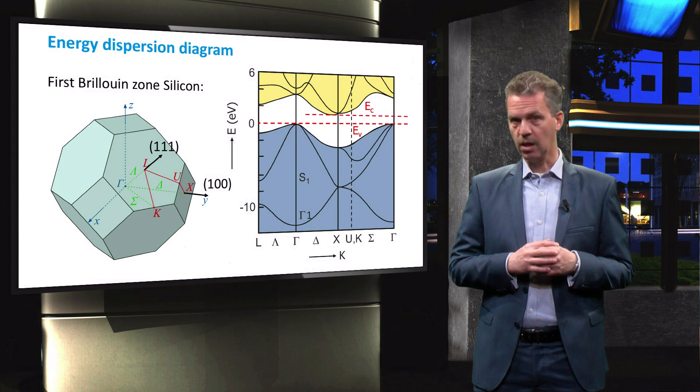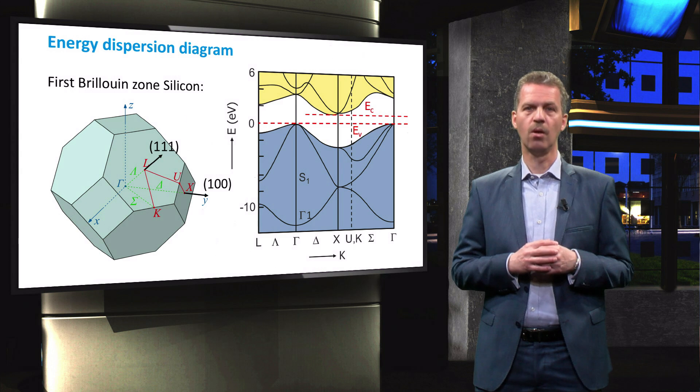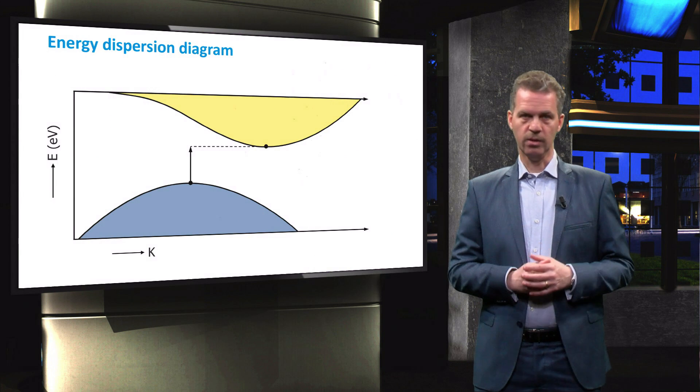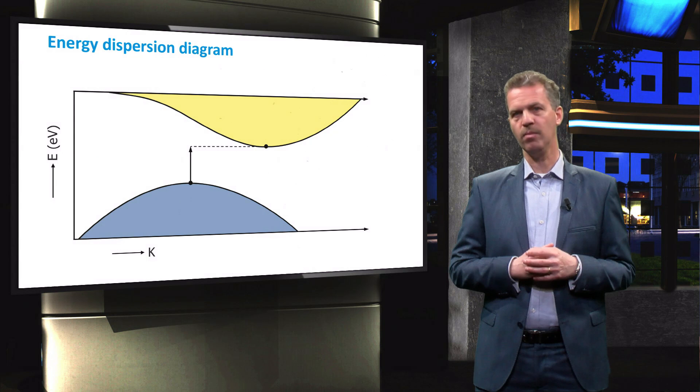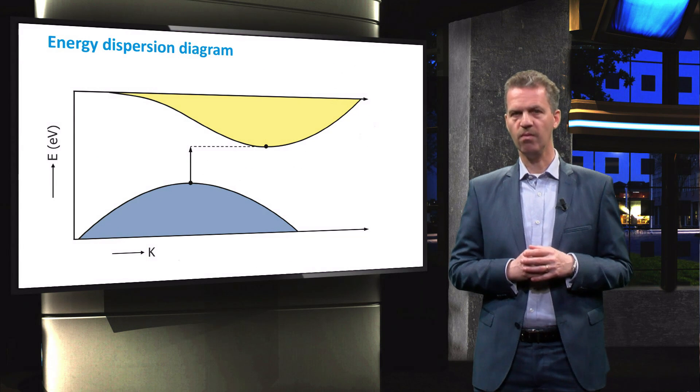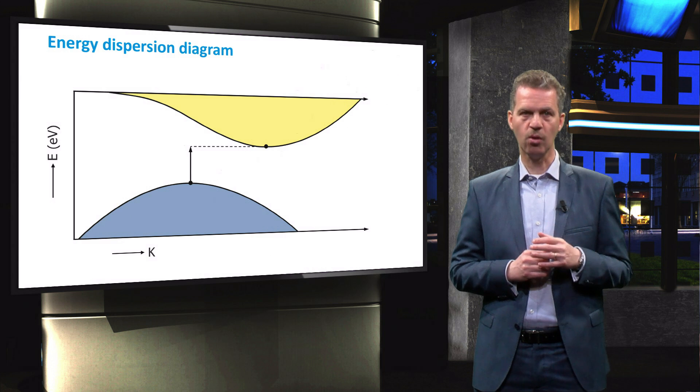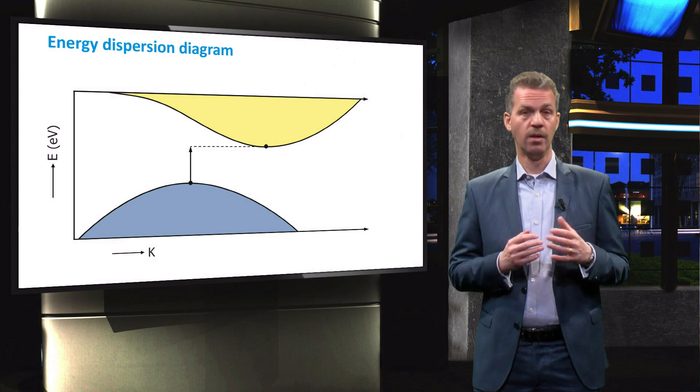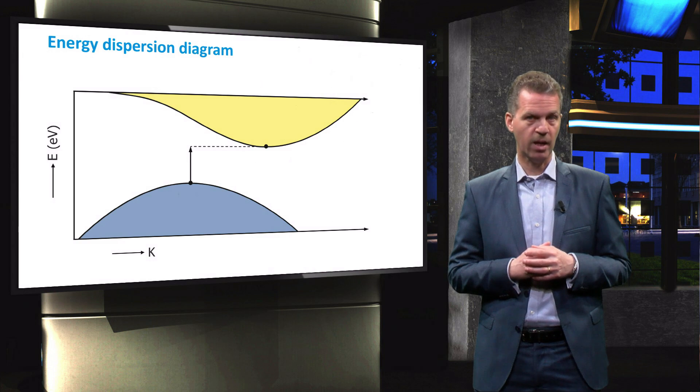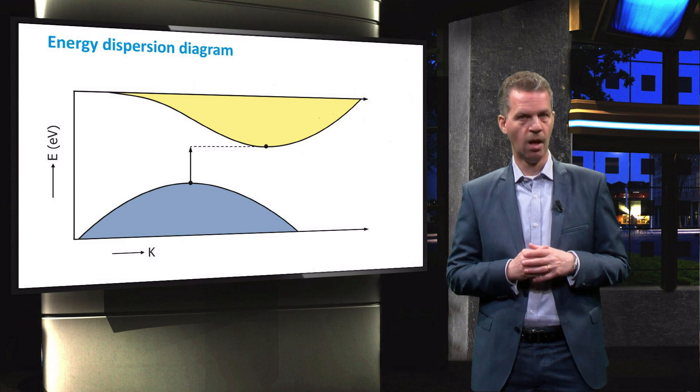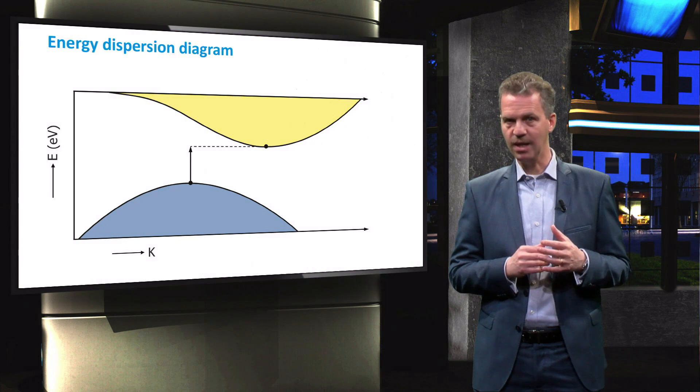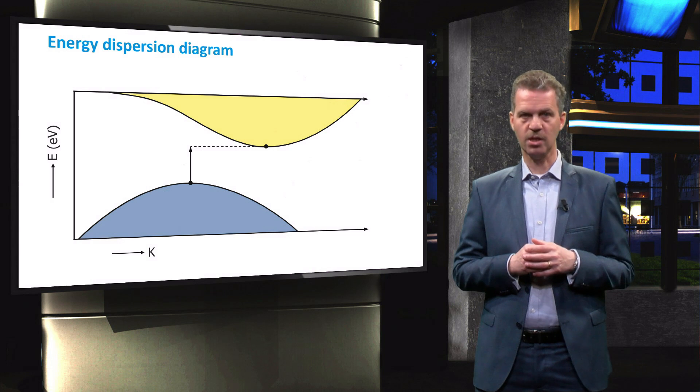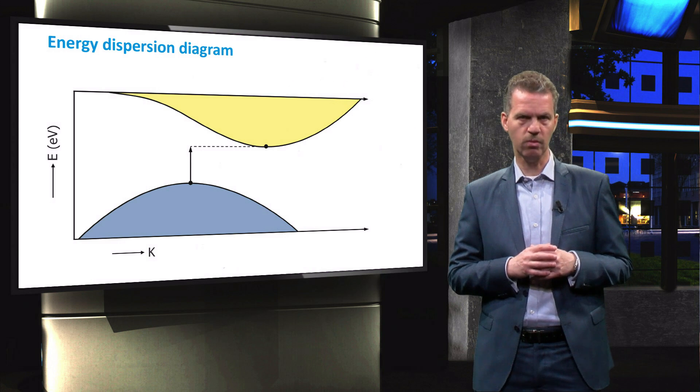This has an important consequence for this material. Silicon is what we call an indirect band gap material. This has implications for the absorption of light, as photons can only be absorbed if the excited electron gains momentum in the lattice to reach the conduction band. This momentum can be transferred to the electrons by lattice vibrations, which are also called phonons. Since this interaction is required and the energy and momentum in the crystal should be conserved, the light absorption of an indirect band gap material such as silicon is much lower than a direct band gap material, as we will see in a moment.